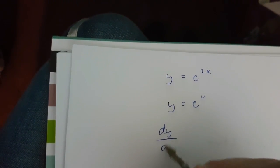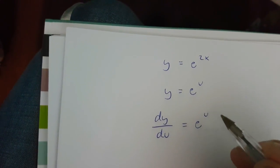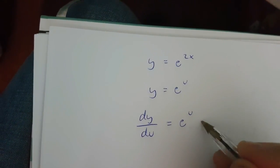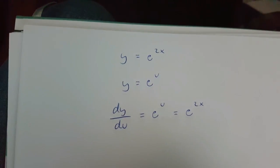If this is the case, then dy over du is going to be equal to e to the power of u, which is e to the power of 2x.